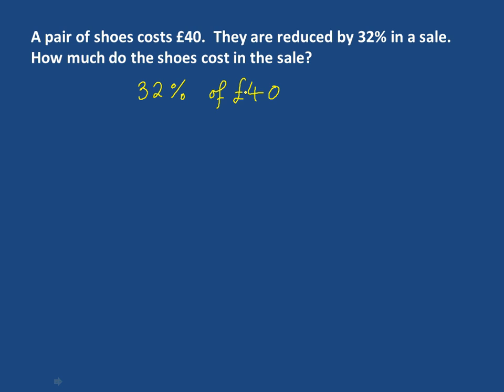So we start these questions knowing that 100% is £40. We start by finding 10%. 10% — you divide £40 by 10. So when we divide this by 10, we get £4.